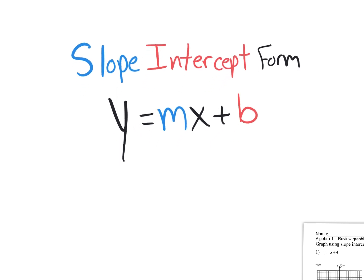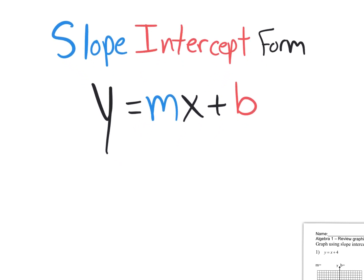Slope-intercept form is one of the most important forms when it comes to graphing linear equations. It says y equals mx plus b. The word 'form' is the way an equation is organized, the way it looks. So right here we have y equals — you want the y by itself, then the equal sign, and then you want the mx. The m is simply a number, actually a fraction, and that's the slope. And then you have the x and then plus b. That b is another number, which is actually the y-intercept.